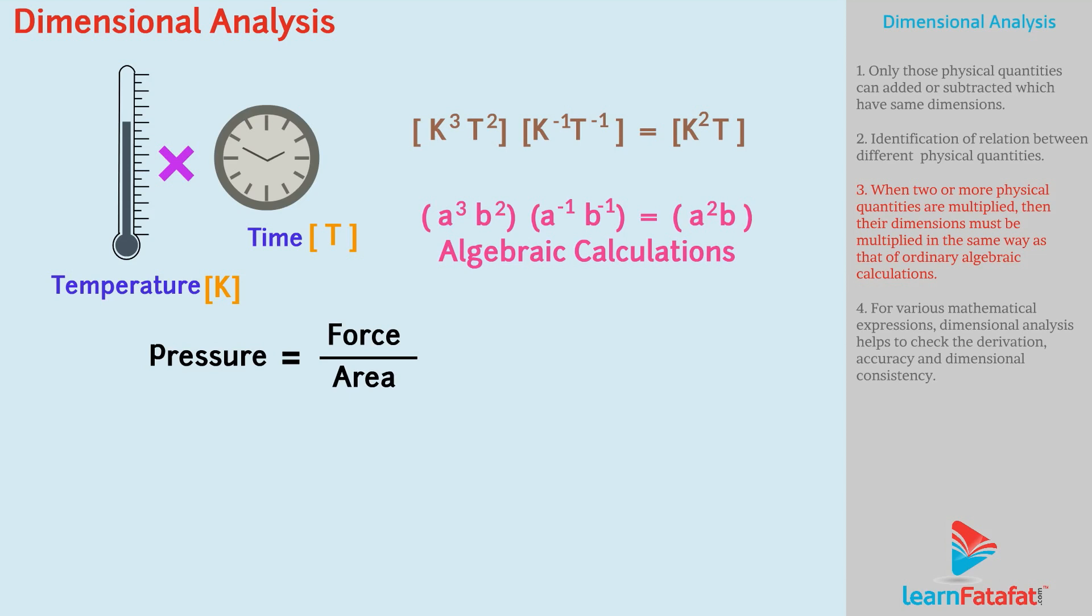Let us try to find the dimensions of pressure. P equals to M L T to the power minus 2 upon L to the power 2, which is equals to M L to the power minus 1 T to the power minus 2. Since L upon L to the power 2 equals to L to the power 1 minus 2, which is equals to L to the power minus 1.